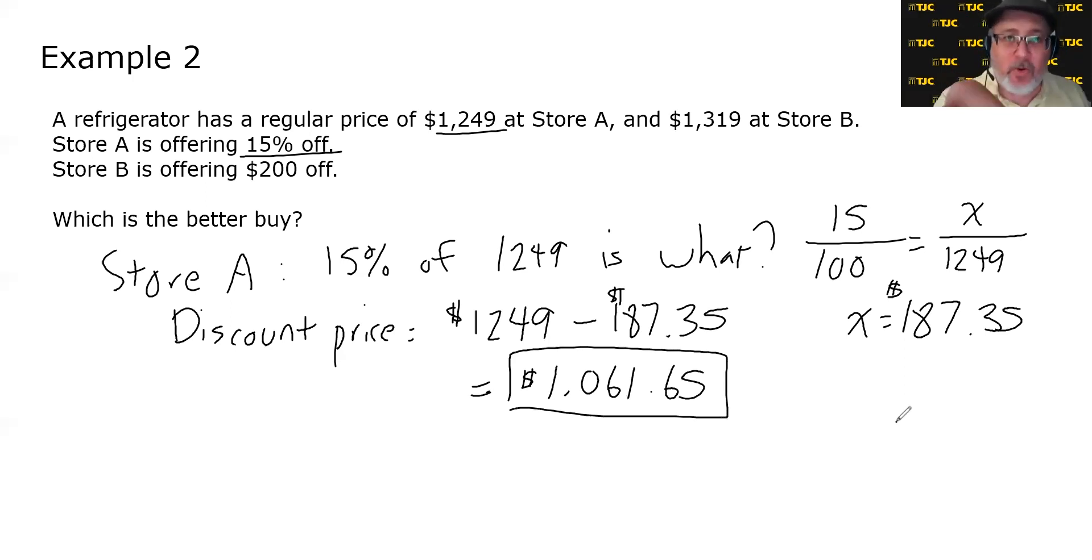Had we set up the equation and solved it, we would have gotten the same thing for the discount price. In other words, had we said 0.15 times 1249 is equal to X, we would have gotten the same value for X, subtracted it from the price, and gotten a discounted price of $1,061.65.